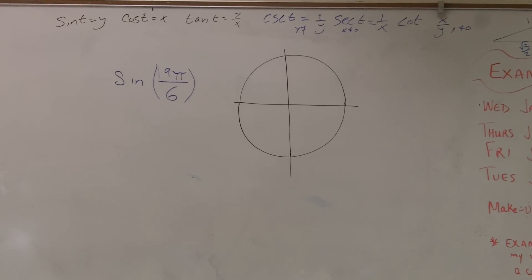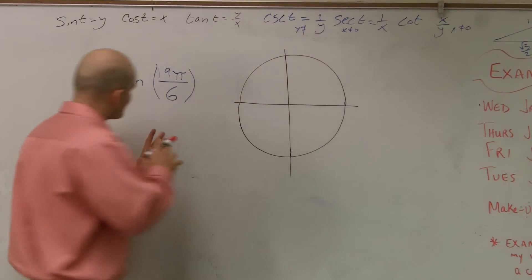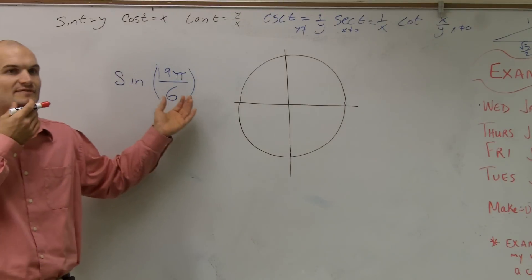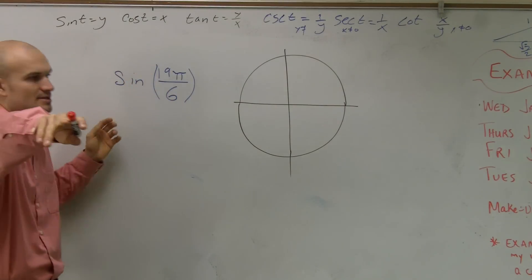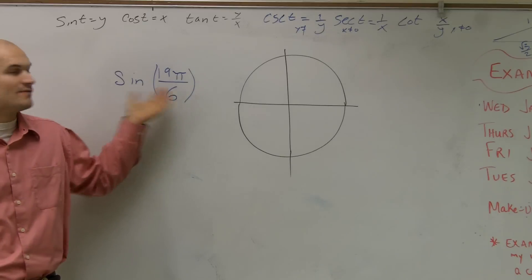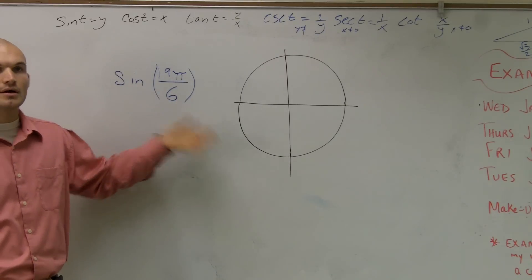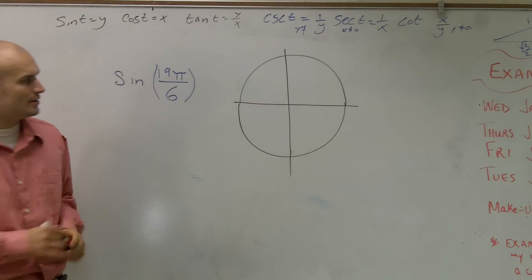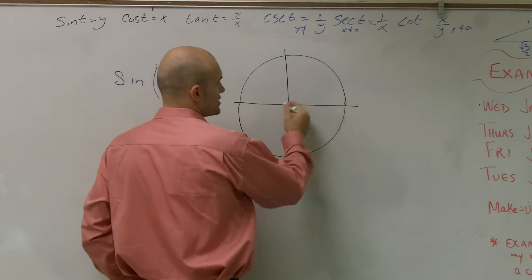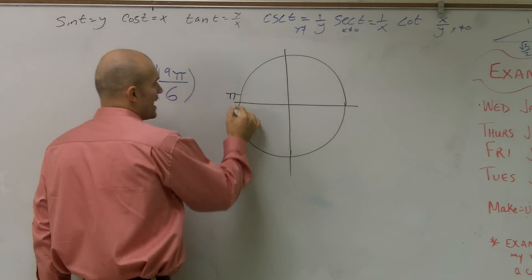What I'm doing for this problem, if you guys look at this, let's say I want to evaluate sine of 19π over 6. If I want to evaluate 19π over 6, a couple things you can look at. We know that here's our initial side, here is π.